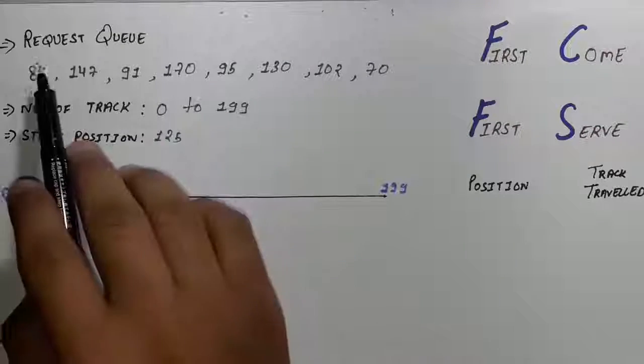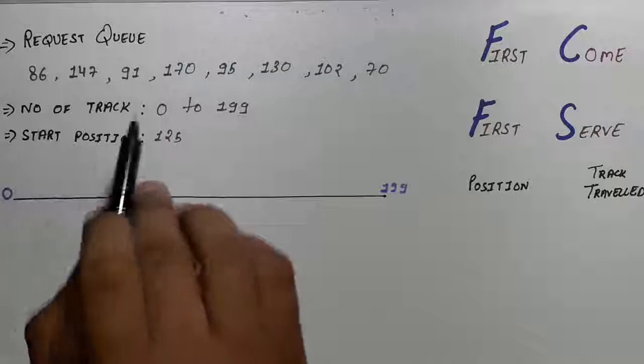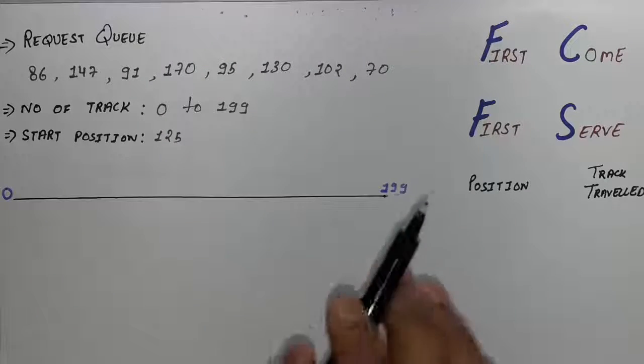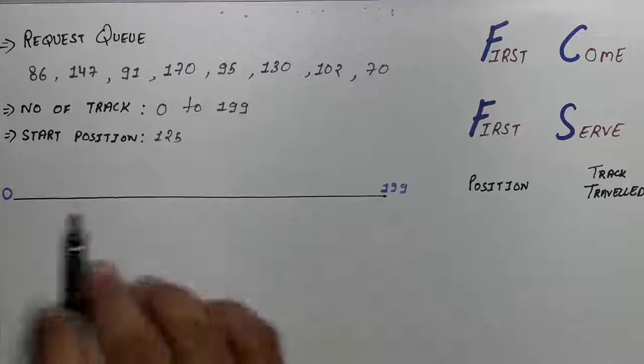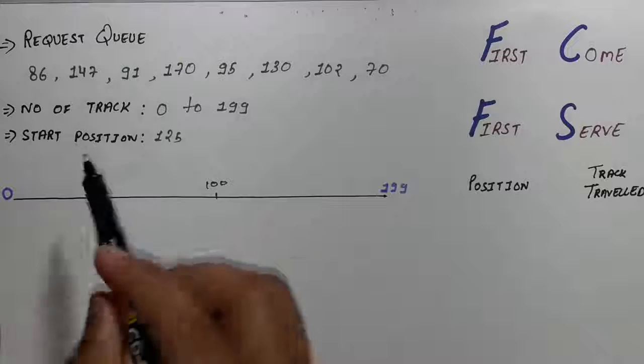In this method you can see we have first a request queue, number of tracks, and starting position. From the number of tracks you have to draw a line from 0 to 199, and you can see because this is from 0 to 200 so there will be 100 between this.